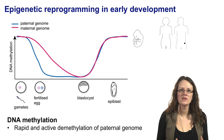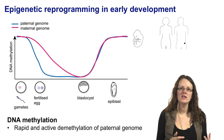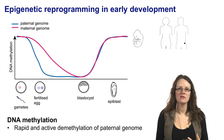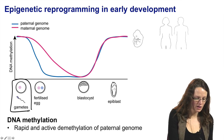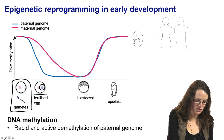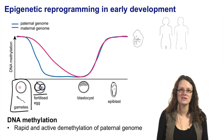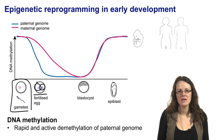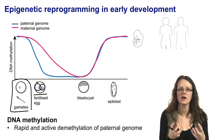Let's think again about this early development reprogramming. I'm showing the paternal genome separate to the maternal genome. Starting with the gametes, after fertilisation we actually have two pronuclei — shown here as two dots. The paternal pronucleus is in blue and the maternal pronucleus is in pink. Very early after fertilisation they still exist as two separate small nuclei before they fuse together.